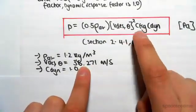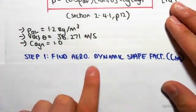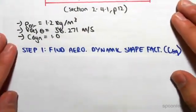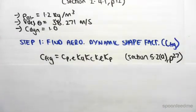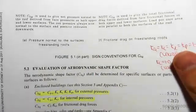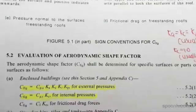C_fig is the aerodynamic shape factor. C_fig equals all of this, and it's from section 5.2, page 27. Flipping over a couple pages to page 27, we have the evaluation of the aerodynamic shape factor.